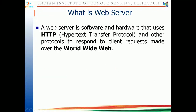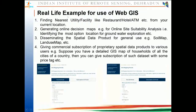A web server is software and hardware that uses the HTTP protocol and other protocols to respond to requests made over the World Wide Web. It checks whether requests are following the HTTP protocol; if not, it will not accept them. Protocols mean rules and regulations. Some examples of Web GIS use cases: finding the nearest utility or facility like a restaurant, hotel, or ATM from your current location.